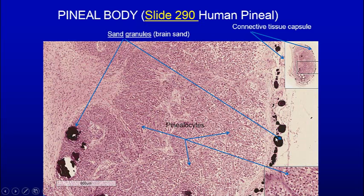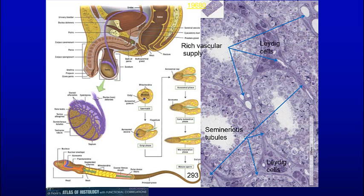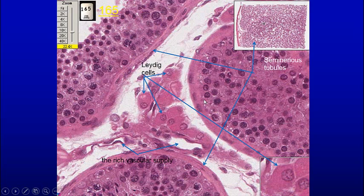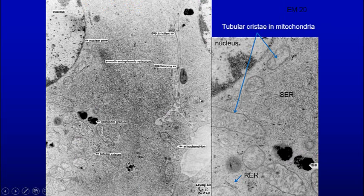Another organ is the testis. Here we can see the seminiferous tubules that produce sperm, and the Leydig cells that produce testosterone, along with blood vessels between them. Leydig cells are distributed throughout the testis to help maintain a high local concentration of testosterone near the developing cells. Leydig cells have an abundance of smooth endoplasmic reticulum because they produce testosterone, and their mitochondria also have tubular cristae — a characteristic of steroid-producing cells.